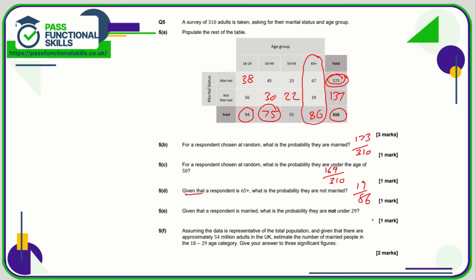Given that the respondent is married, we're looking at the married group of 173. What's the probability they are not under 29? We exclude the under-29 group and add up 45, 23, and 67, which comes to 135 out of 173.